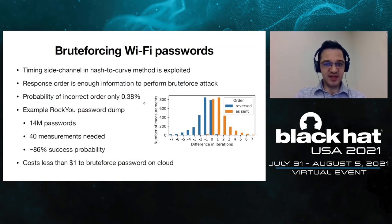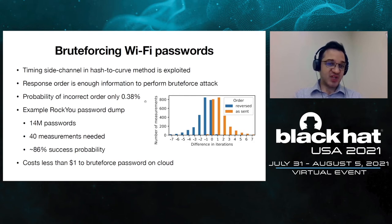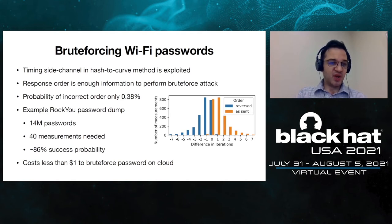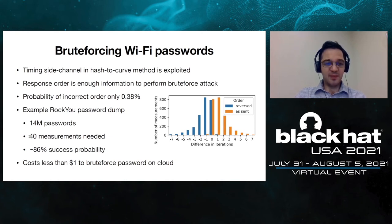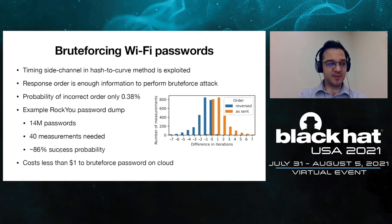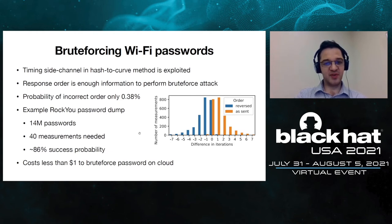The order of responses leaks enough information to perform an offline dictionary attack against the user's password. In experiments, the response order at the Wi-Fi clients correctly corresponded to the difference in execution time on the FreeRADIUS server in over 99% of cases — only less than 1% of the time did we incorrectly derive the execution time. Using the RockYou database dump of about 40 million passwords, 40 measurements are enough to derive the victim's password with 86% success probability, at a cost of less than $1 on the cloud.